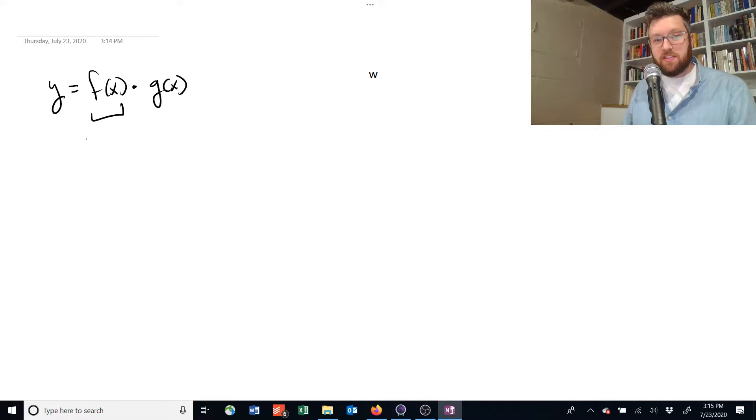So as an example, suppose this thing is equal to 3x plus 2, and this is equal to the natural log of x. And let me just say up here, we're talking about the product rule. Ignore that w.